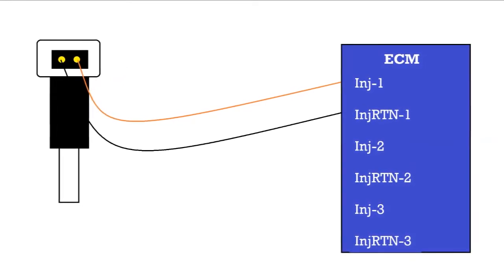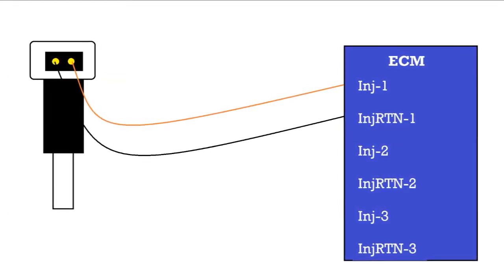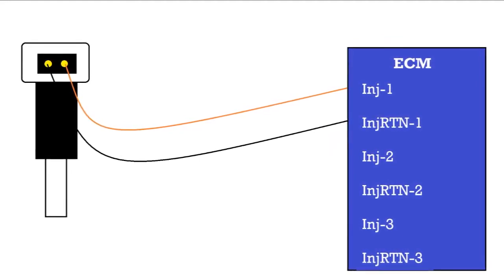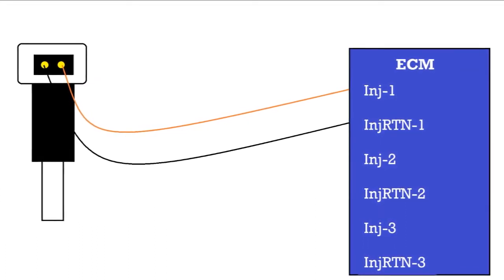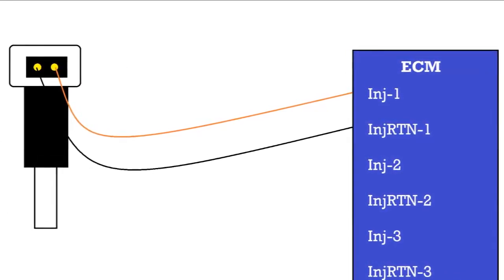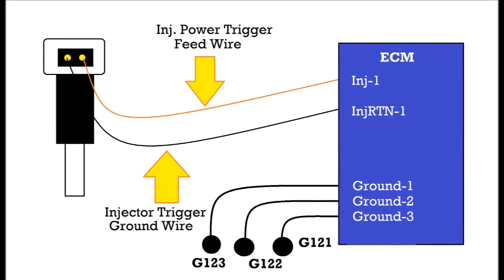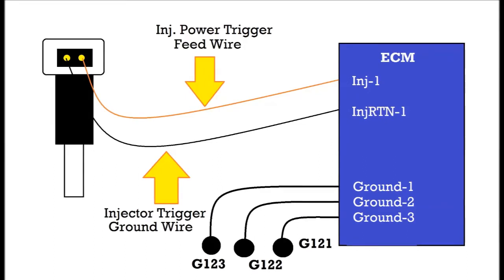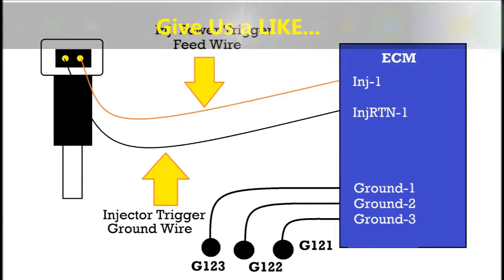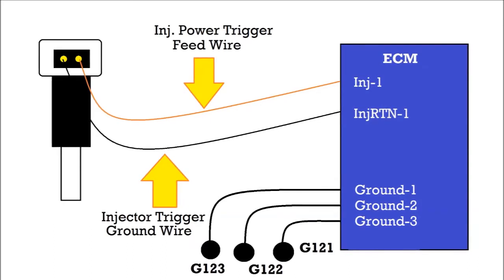Now we're going to show you what this return is all about. This is how the injectors are triggered. The ECM has two lines going to the injector: the injector one trigger and the injector return for one. We're going to explain one injector — it's the same for all four. These are direct injectors, and we are going to explain the old-fashioned and the new ones.